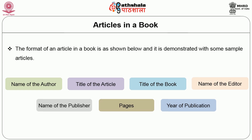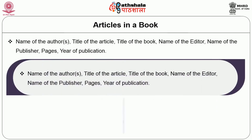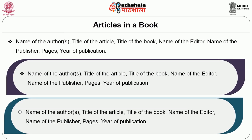For a book reference, the format is: name of the author, title of the book, place of publication, year. For articles in a book, the format includes: name of the author, title of the article, title of the book, name of the editor, name of the publisher, pages, and year of publication.